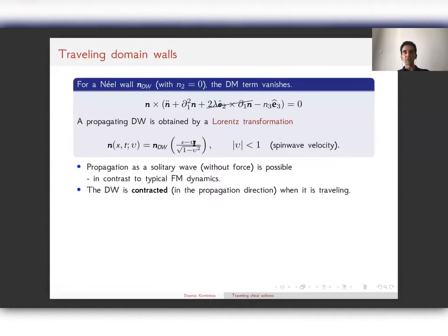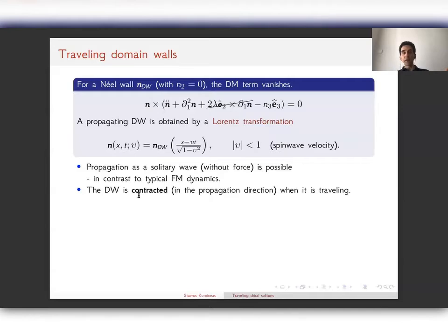We substitute x → (x − vt)/√(1 − v²), which is valid as long as v is smaller than one — the spin wave velocity in our normalization. What we learn is that there are propagating solitary waves in an antiferromagnet, quite different from typical ferromagnetic dynamics. A propagating domain wall is Lorentz-contracted, as dictated by the Lorentz transformation.